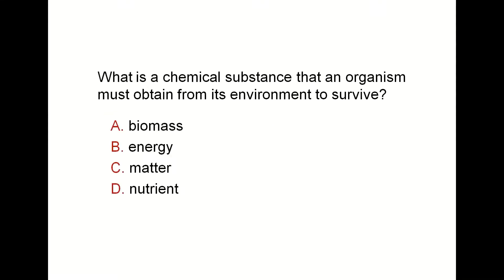Next: what is a chemical substance that an organism must obtain from its environment to survive? All living organisms require food, and this food contains six nutrients: protein, carbohydrates, fats, minerals, vitamins, and their components. All of these are nutrients, and all living things require nutrients to survive.